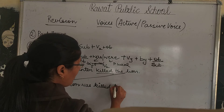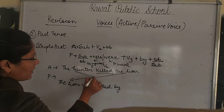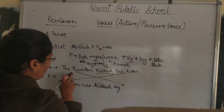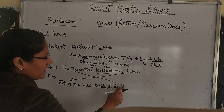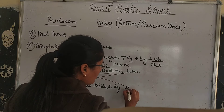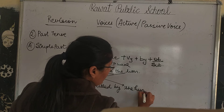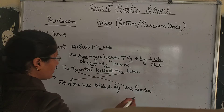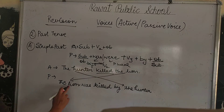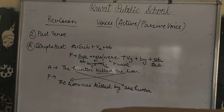Then 'by', and then the original subject 'the hunter'. The lion is third person singular, so the form changes accordingly. The passive sentence becomes: 'The lion was killed by the hunter.'